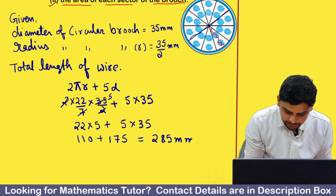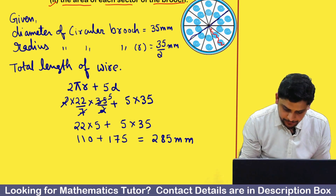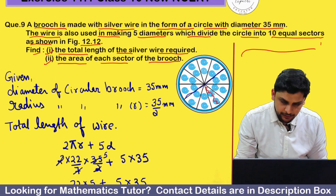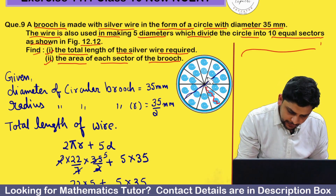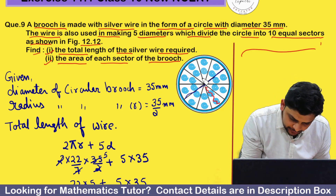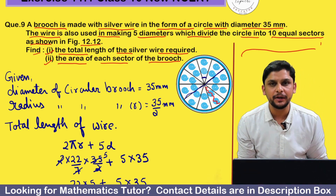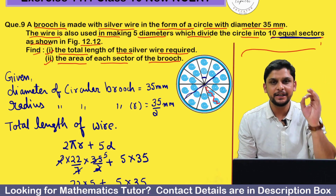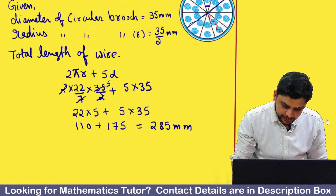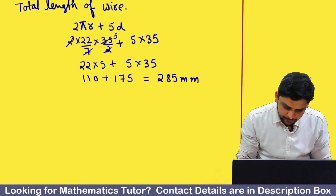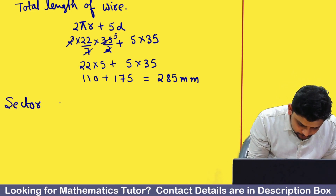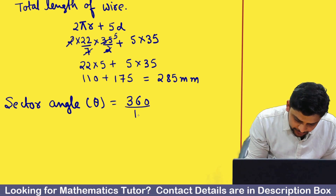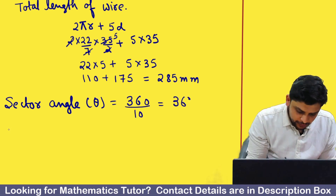The unit is mm. Now we move to the second part. Our shape is the brush, with the given radius. Since there are 10 equal sectors, the sector angle theta = 360 divided by 10 = 36 degrees.